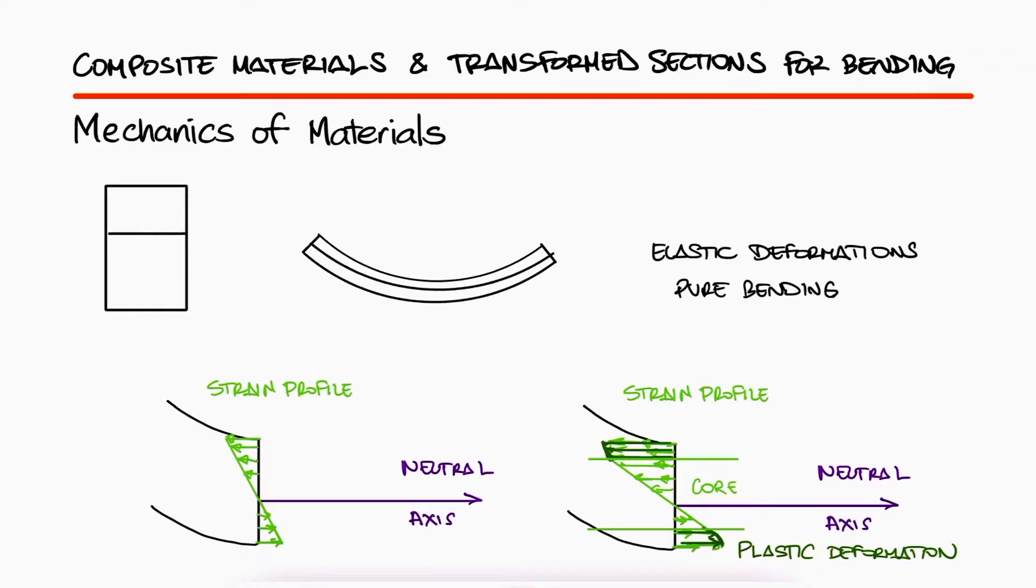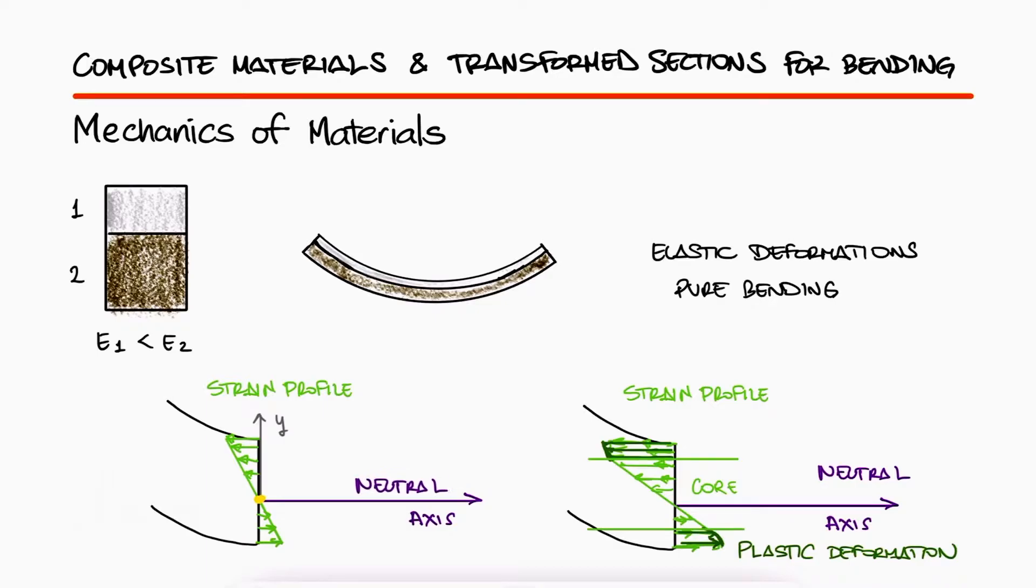By looking at a composite bar made out of material 1 and material 2, top and bottom, where the elastic modulus of 1 is lower than that of 2, we'd see that the strain starts at zero for y equal to zero, that is, on the neutral axis, and it increases linearly until it reaches a maximum value either at the top or the bottom. There is no discontinuity of the strain at the boundary between material 1 and 2.